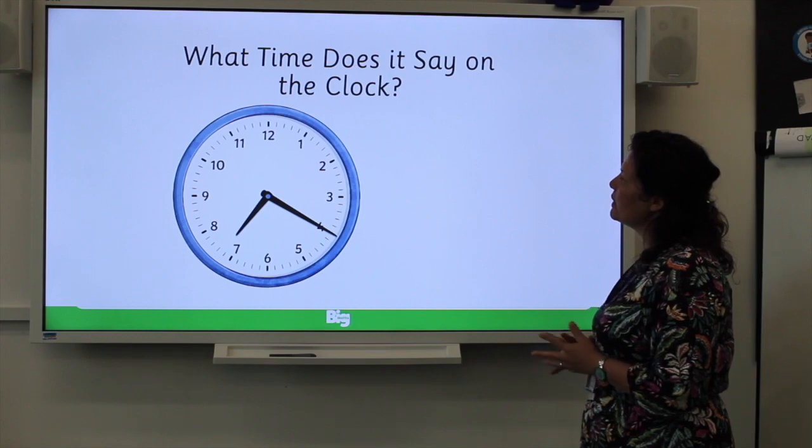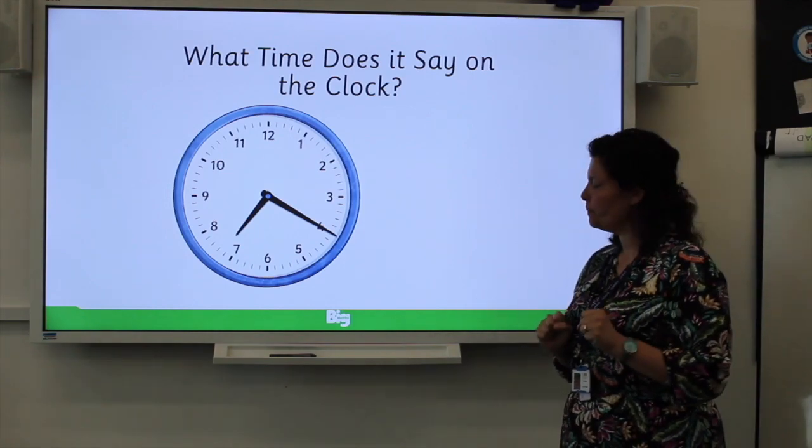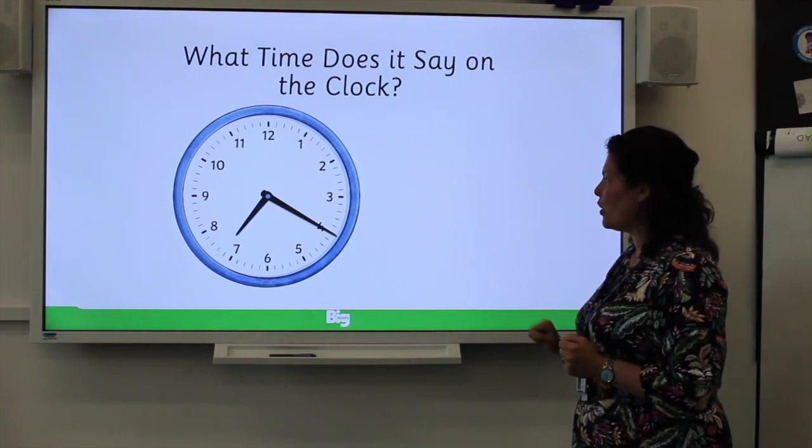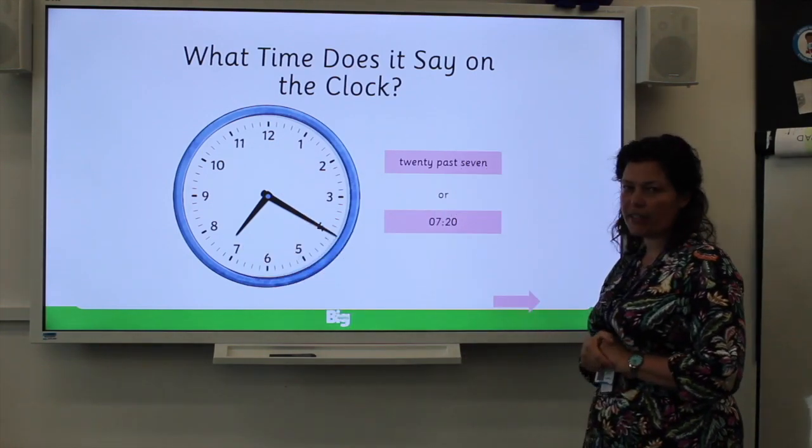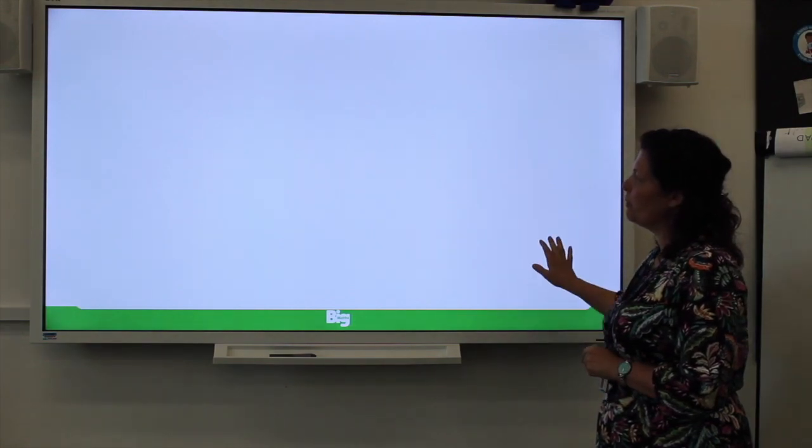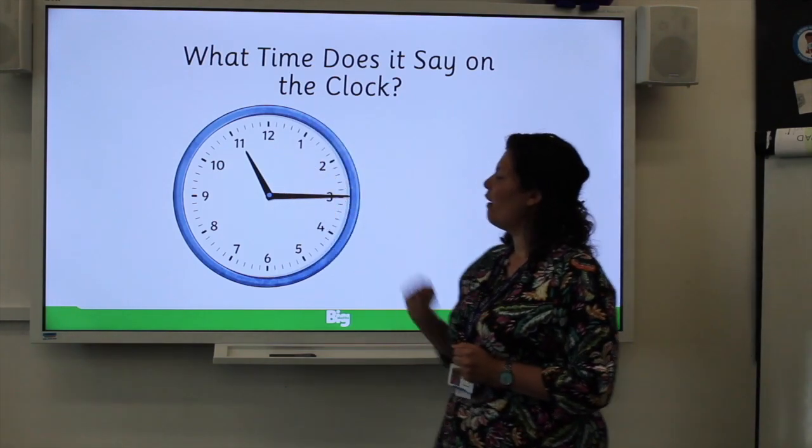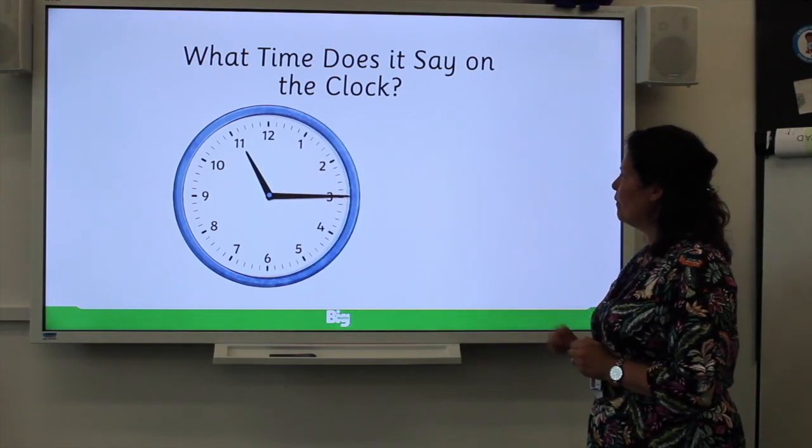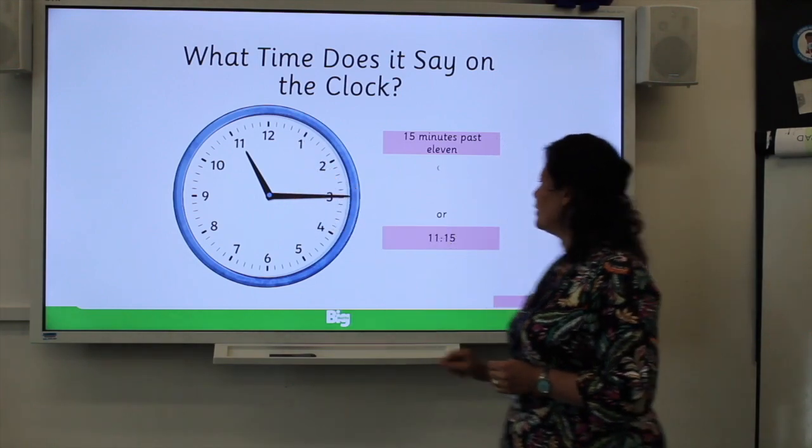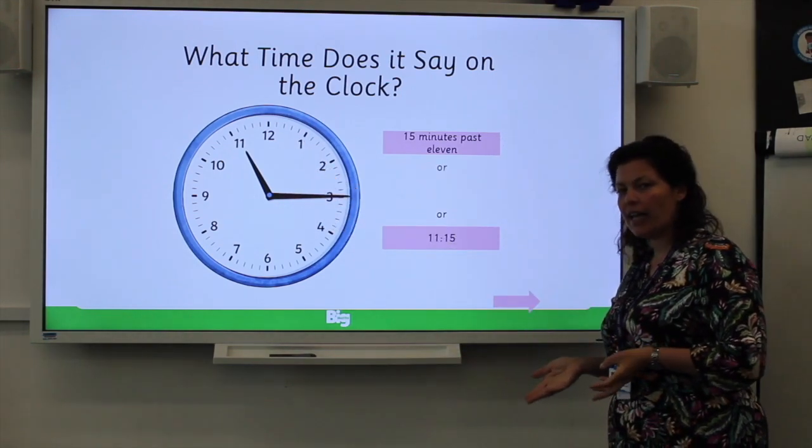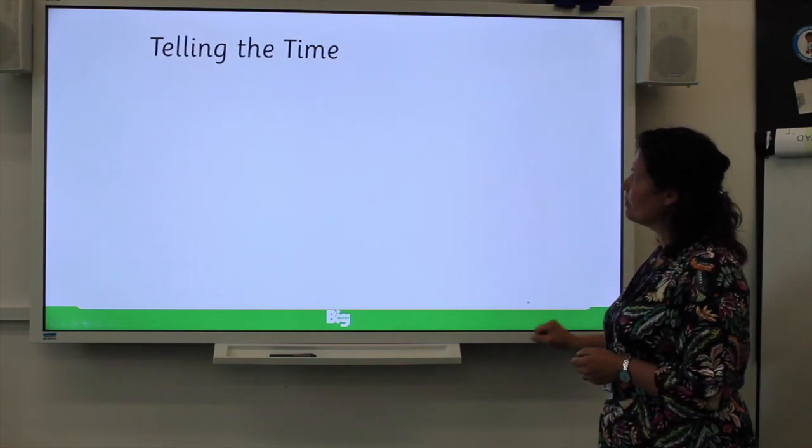Here's another clock for you. What time does it say on the clock? Have a look at that minute hand. Pause. Check your answer. Twenty minutes past seven... eleven. Or seven twenty on a digital clock. What time is it now? Think of the minutes. Fifteen minutes past eleven, or eleven fifteen. Or you might even say quarter past eleven.